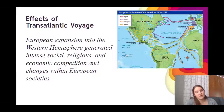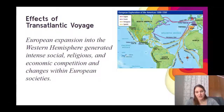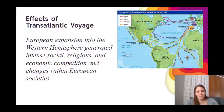So, the effects of transatlantic voyages. When you're writing a causation prompt, you want to make sure you have a defined argument — a claim. Here's one taken straight from the course outline for unit one: European expansion into the Western Hemisphere generated intense social, religious, and economic competition and changes within European societies. That's one example of a claim — that expansion generated different types of competition.